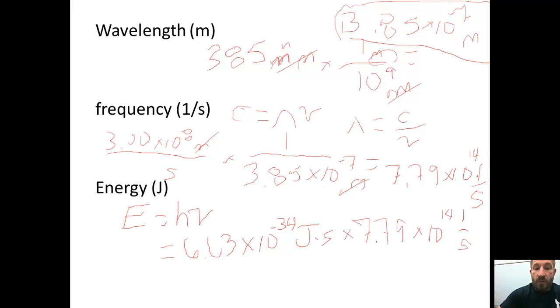Your final answer for this will be 5.17 times 10 to the minus 19 joules. Make sure you can do these calculations when you come in on your calculator because we're going to be doing these several times.